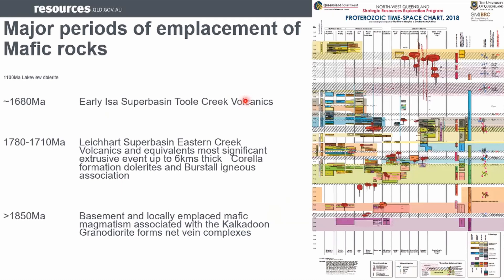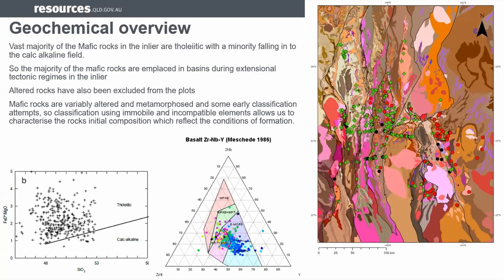This is just the broad groupings of the major mafic events. There are mafic rocks in the KLB, then a large amount in the Leichardt Superbasin and also in the early Liza Superbasin. The dataset was curated to exclude intermediate rocks and also excluded altered rocks based on major element factors. The vast majority of the rocks plot in the tholeiitic field, with a minority falling in the calc-alkaline field.